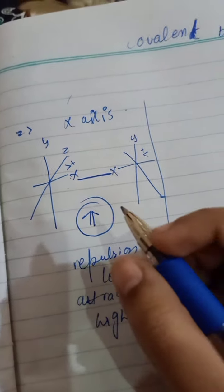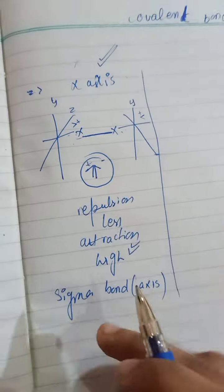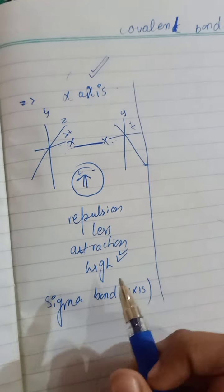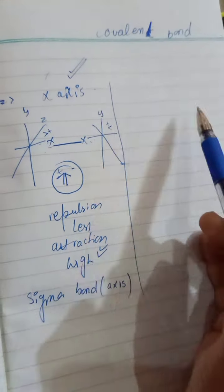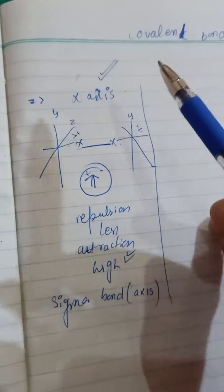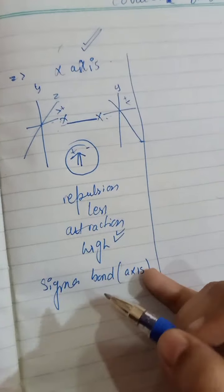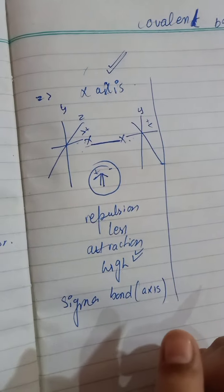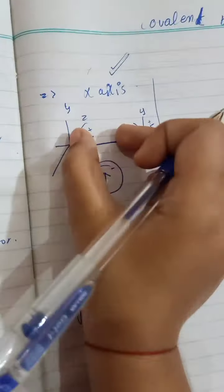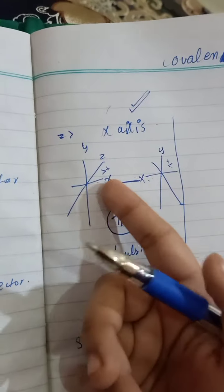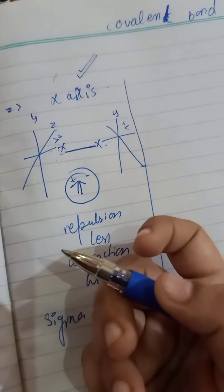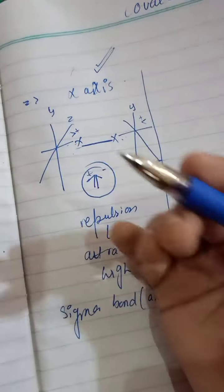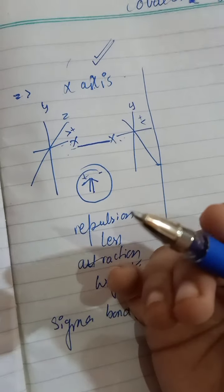First of all, the covalent bond occurs as the sigma bond. Then the covalent bond will occur in the y and z axes. The x-axis makes the first covalent bond, which is the sigma bond. This is the sharing between face to face, or you can say head to head. So the example of the single covalent bond is the x-axis, which forms the sigma bond.